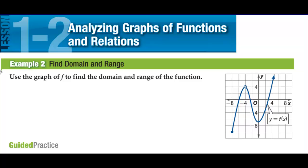The domain is the x values that are used to graph the function. So we start with negative 8, and we're going to use all the x values until we get to negative 4. Negative 4 is not actually used — we don't have a function value for negative 4. Then we use all values from negative 4, not including that value, all the way to infinity, going right forever as well.